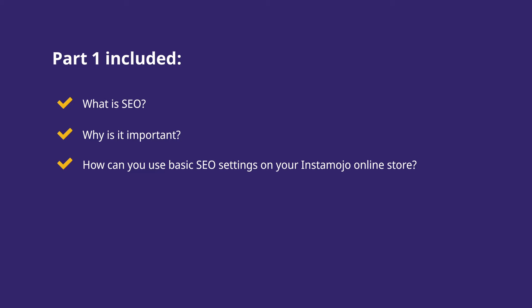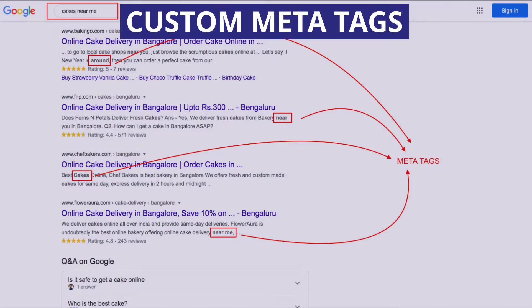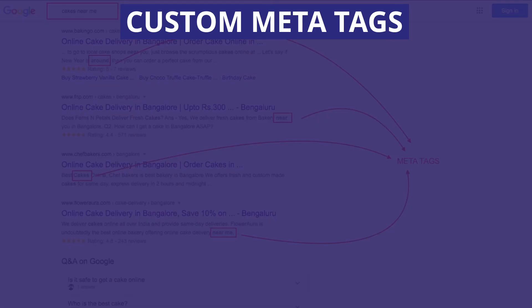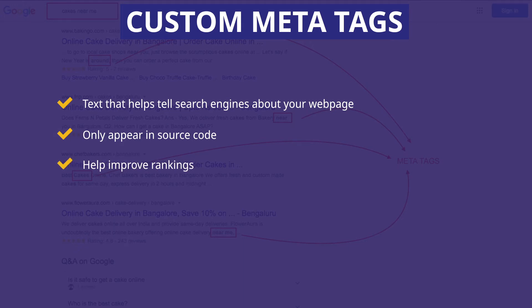For today's video, we'll be discussing more on custom meta tags and how to set those up on your Instamojo store. Meta tags are essentially small snippets of text that help tell search engines what a web page is about. These tags don't appear on the page itself, but only in the page's source code, and help improve your search engine rankings.